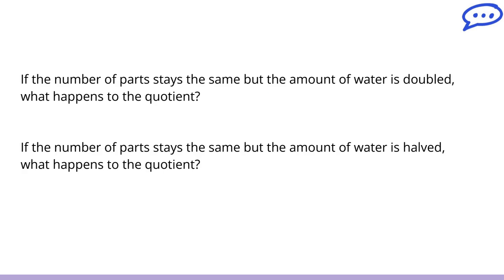Here are two questions I want us to think about for the ending of this lesson. If the number of parts stays the same, but the amount of water is doubled, what happens to the quotient? We can think about this as looking at the 11 divided by 4. If our divisor stays the same, but the amount of water is doubled, what happens to the quotient? So if I increase this 11 to be any other number, that quotient is also going to go up. So if I double that amount of water to be 22, my quotient would also double in its amount.